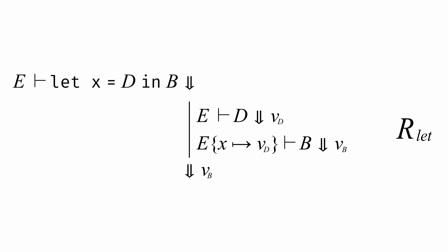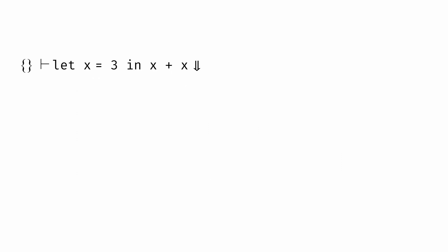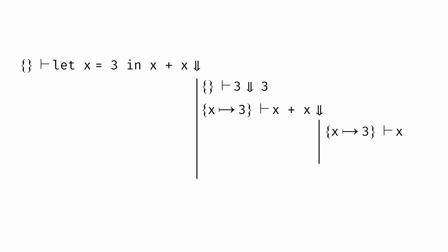Let's take a look at an example. We can try to evaluate the expression "let x equal 3 in x plus x" in the empty environment. Since this is a let expression, we start by evaluating the definition expression 3 in the empty environment — it's a number, so it evaluates to itself, 3. Now we evaluate the body in the environment we get when we take the empty environment and augment it so that x maps to 3. When we evaluate the left side of the addition, x in an environment where x maps to 3 evaluates to 3. The same happens for the right side, so the entire expression evaluates to the sum of 3 and 3, which is 6.